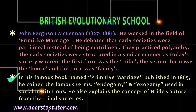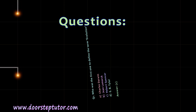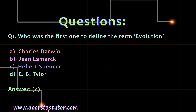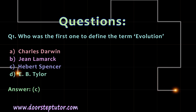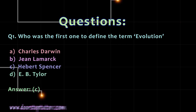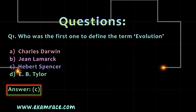With complete understanding of British classical evolutionism, let us do some multiple choice questions. The first question: who was the first one to define the term evolution? Option A: Charles Darwin. Option B: Jean Lamarck. Option C: Herbert Spencer. Option D: E.B. Taylor. The correct answer is Option C, Herbert Spencer.